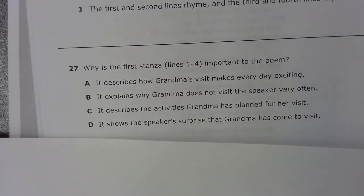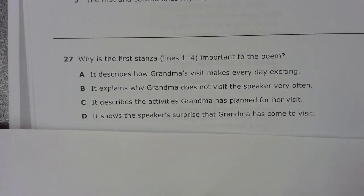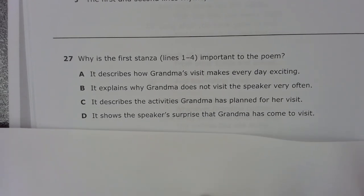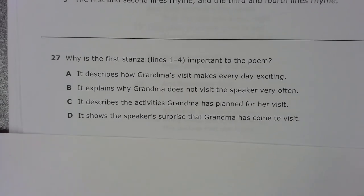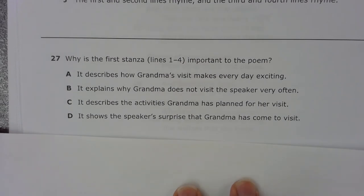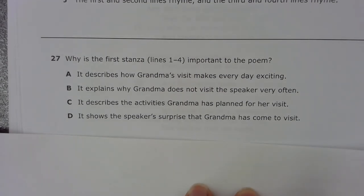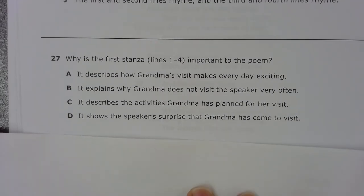Number 27. Why is the first stanza, lines 1 through 4, important to the poem? A. It describes how Grandma's visit makes every day exciting. B. It explains why Grandma does not visit the speaker very often. C. It describes the activities Grandma has planned for her visit. D. It shows the speaker's surprise that Grandma has come to visit.